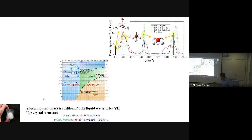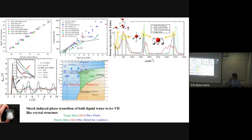Once we select the interatomic potential, we match the US-UP relationship provided by experiments. If we match this relationship, the interatomic potential is considered good enough for simulating shock conditions. We can see a notch in the radial distribution function (RDF) for oxygen-oxygen, which represents the transition from bulk water to the I7 phase.